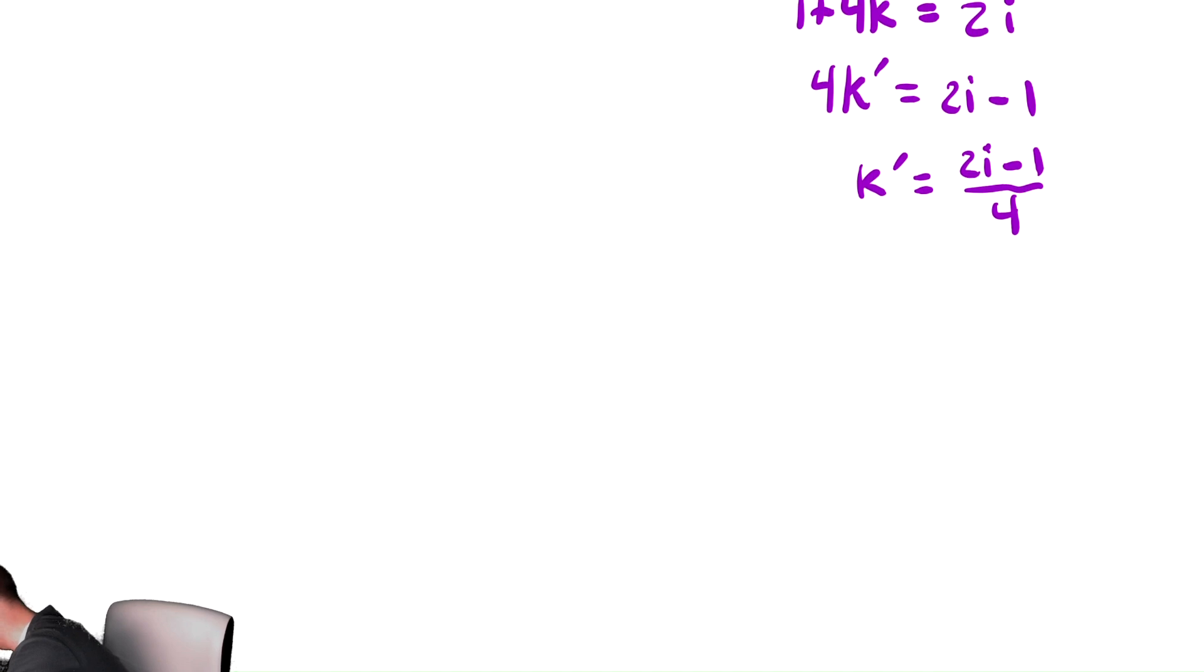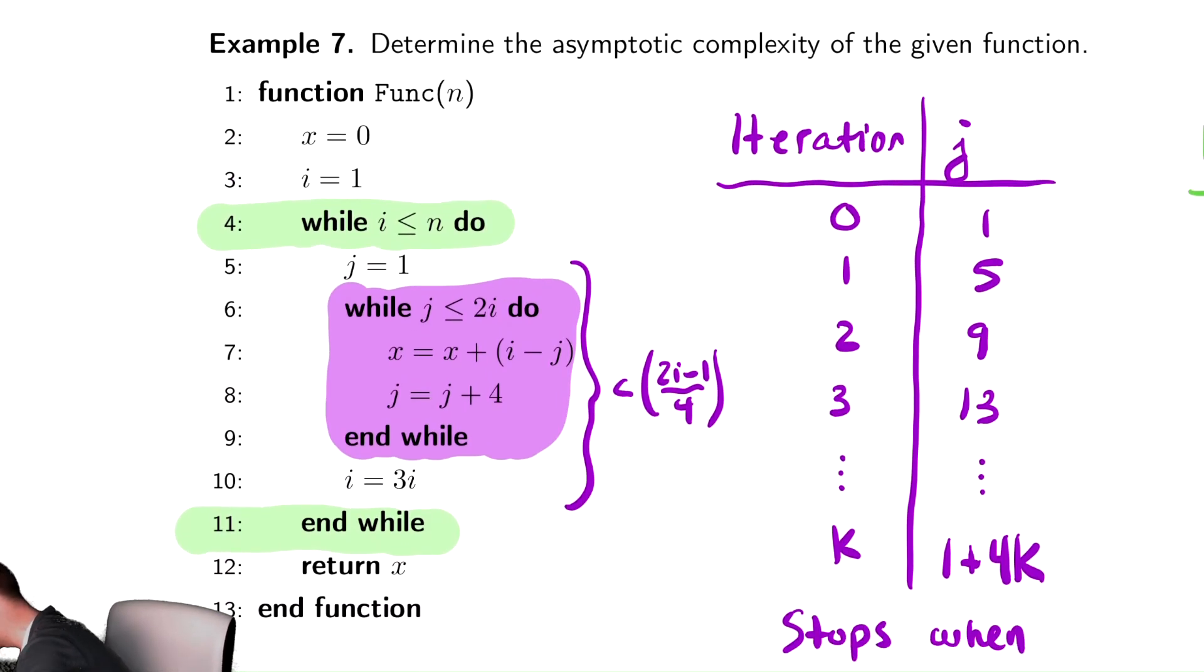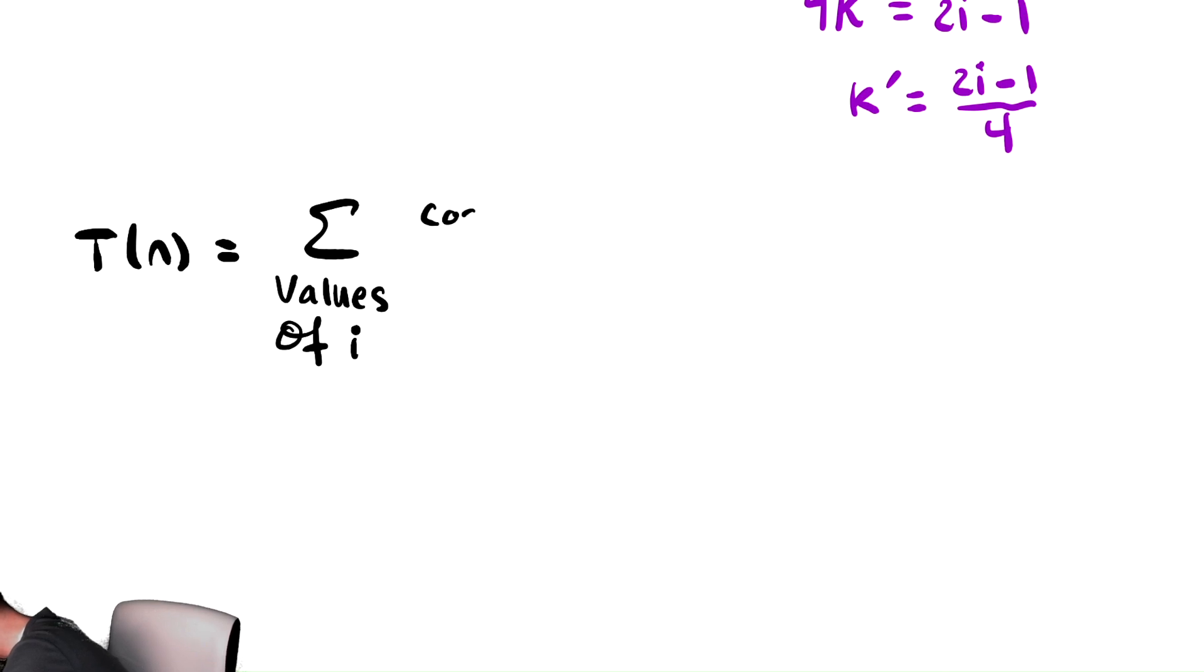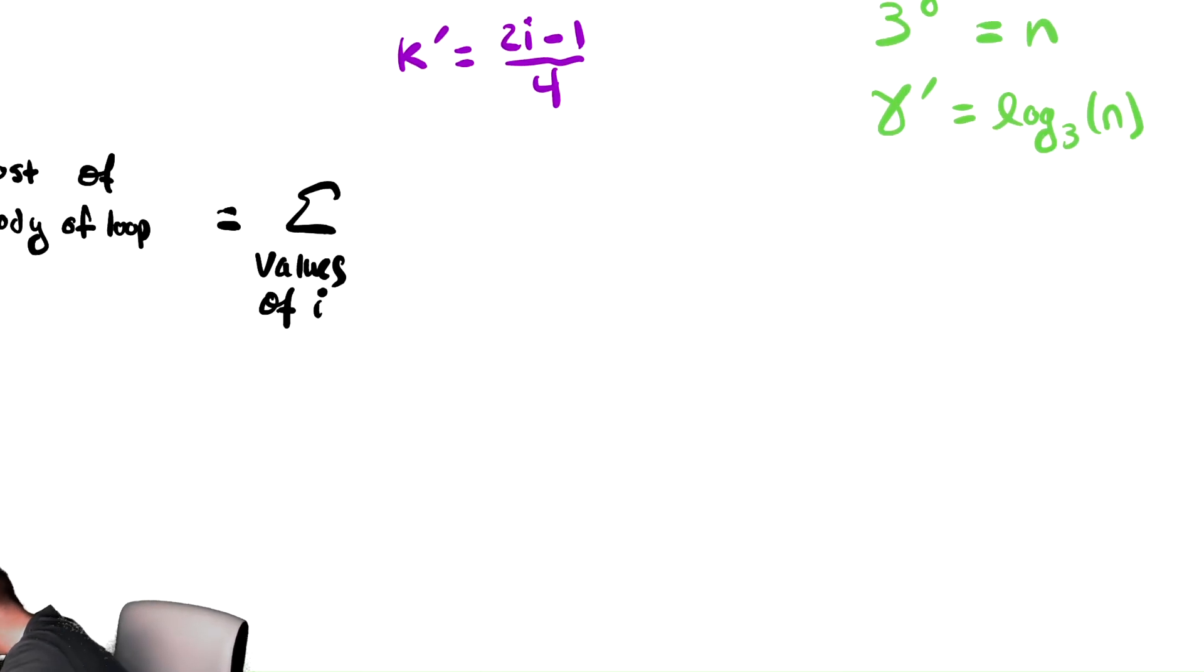So always we can express this runtime in the following manner as T of n is equal to the sum over the values of i of the cost of the body of the loop. This is the cost of body of loop, which we write as the sum over the values of i of whatever the cost was. In this case, it's that stuff that's in purple. To really showcase what's happening, we're just going to write it in purple as well. So our cost here is c times 2i minus 1 divided by 4.